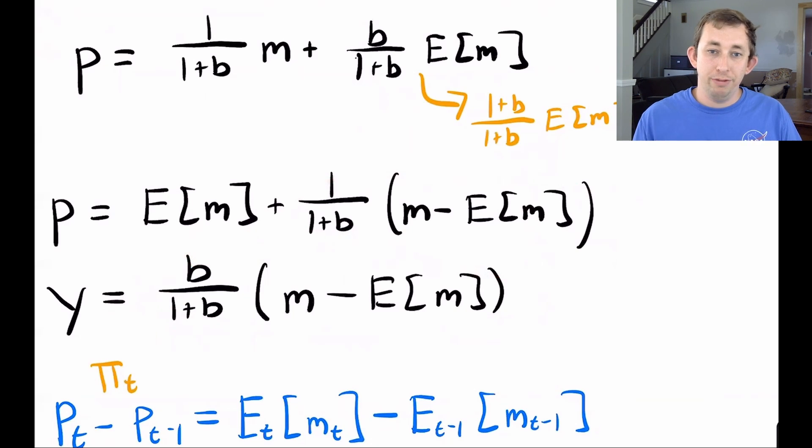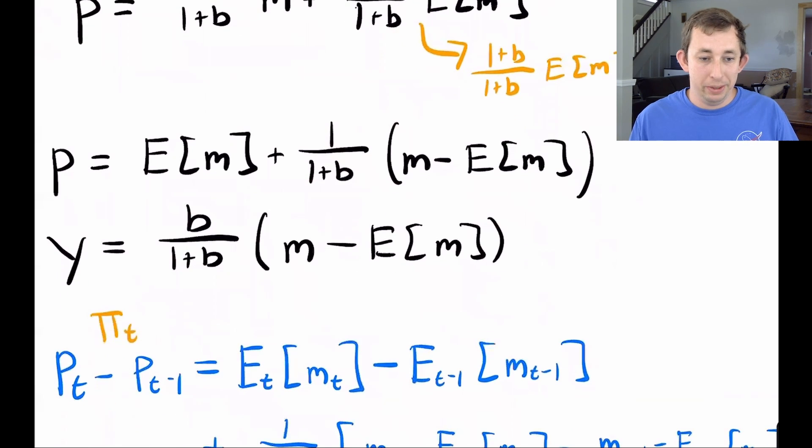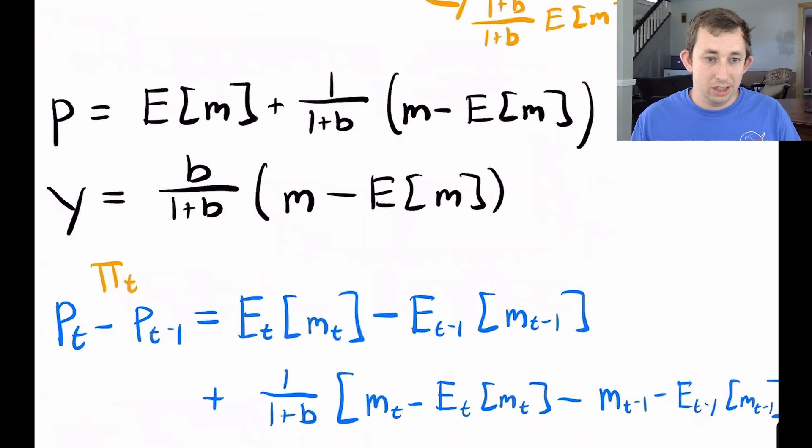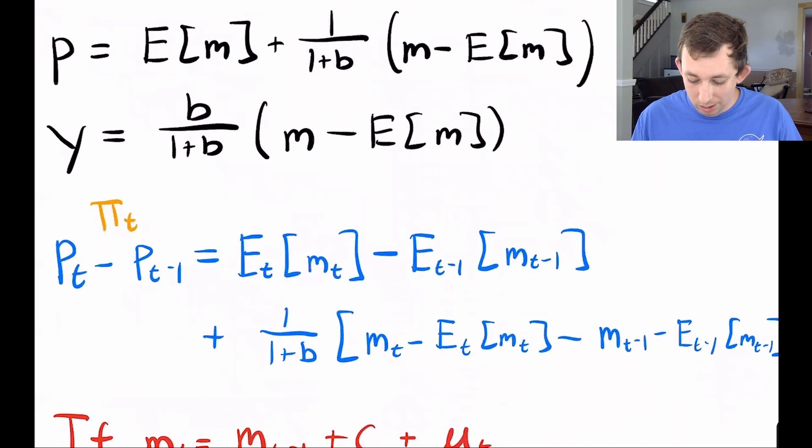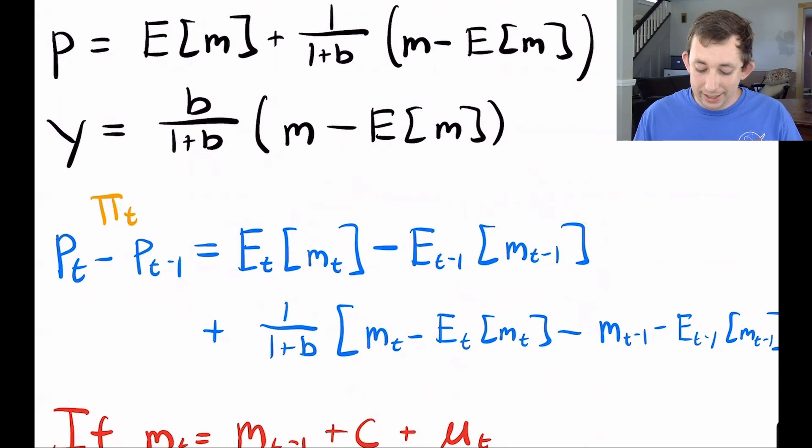And now I can find an equation for inflation because inflation is just p t minus p t minus one. So I am going to just substitute in the equation for p t minus the same equation for p t minus one and get to this nice equation in blue. Notice that I have an expectations augmented Phillips curve here because I have some expectations for the money supply today and expectations for the money supply yesterday. So the Lucas supply function allows us to get an expectations augmented Phillips curve from a micro based model.